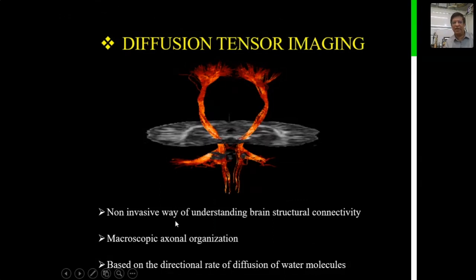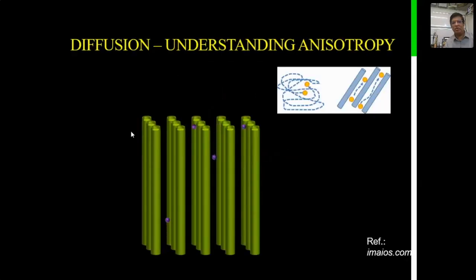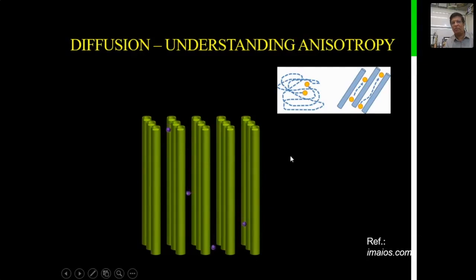Diffusion tensor imaging is an extension of the diffusion sequence — a non-invasive way of understanding brain structural connectivity. It allows us to examine microscopic axonal organization of white matter tracts based on the directional rate of diffusion of water molecules. Along white matter tracts, water molecules move at approximately 5 cm per minute, while perpendicular to the tracts, diffusivity is virtually zero. In tumors and lesions, diffusivity lies somewhere in between.